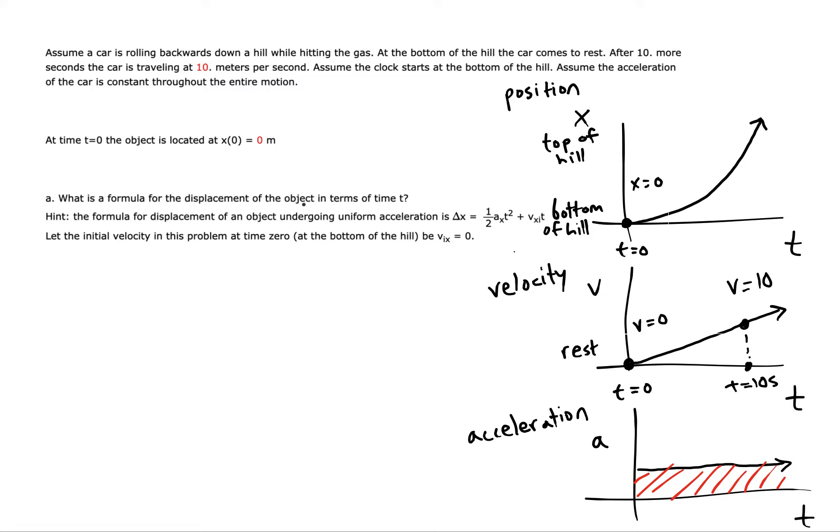What is a formula for the displacement of the object in terms of time T? The displacement for a situation involving acceleration would be one half a T squared plus v_i T. Yeah, so we need a_x and v_ix. Alright, so this is the initial velocity and this is the acceleration.